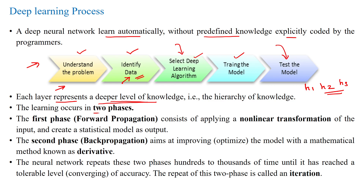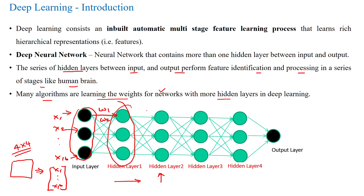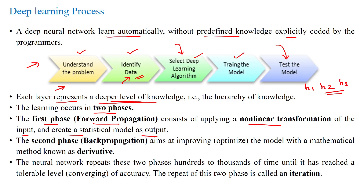Training occurs in two different phases. The first phase is forward propagation, where we apply a non-linear transformation of the given input, creating a statistical model as output. Each neuron has a transformation function and an activation function, and based on that it calculates the output for each input of the given layers. At the end of forward propagation we get the predicted output y-dash, and from that we calculate the cost for each input.